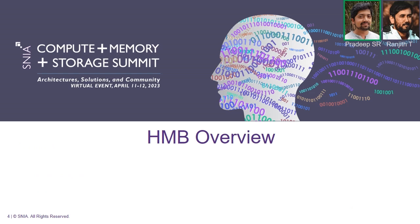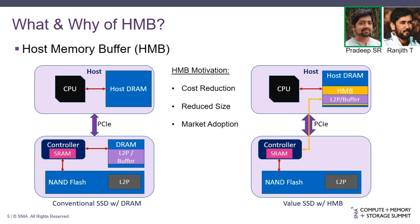Let's begin with the HMB overview. HMB stands for Host Memory Buffer. In simple terms, it means we are borrowing some of the host DRAM for the dedicated use of the SSD. Before value SSDs with HMB entered the market, drives with a DRAM chip on the board — the conventional SSDs — were the standard. The DRAM is a high-speed volatile interface, and sitting next to the controller gives a lot of advantage. It is mainly used for the L2P (logical to physical) translation table and also as a stop-gap buffer for incoming IO before being flushed into the NAND.